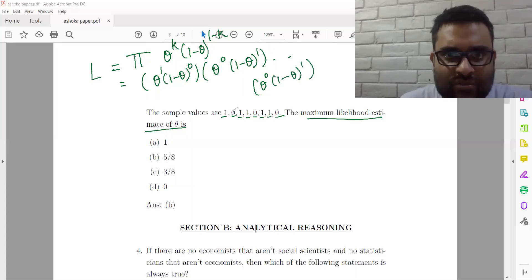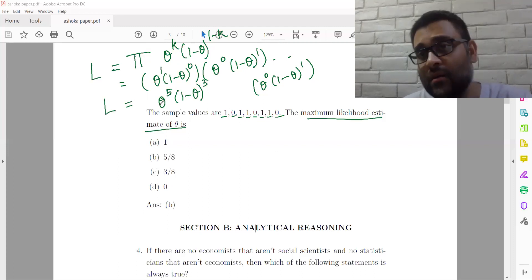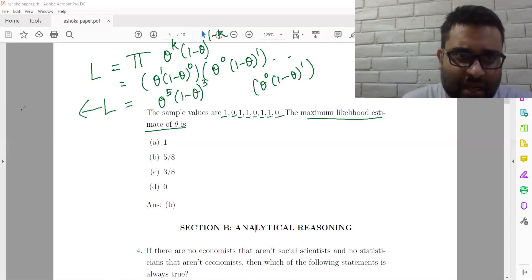See, k is equal to 0, k is equal to 1, last is equal to 0. So in totality, we have 5 ones. So, theta to the power 5 into 1 minus theta cube. This is what is the maximum likelihood function. This is the maximum likelihood function.